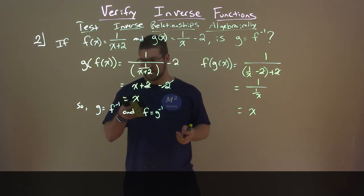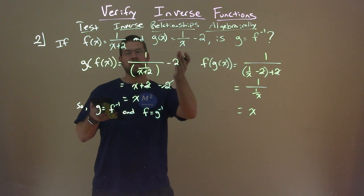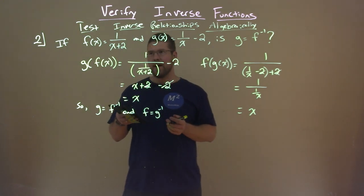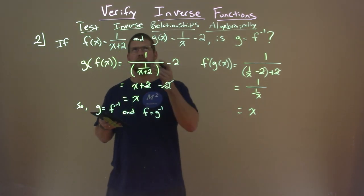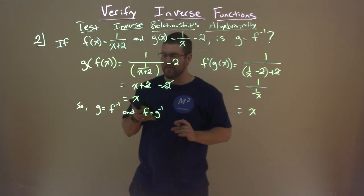Verifying that we're good, it worked out. They both equaled x, so we can say that yes, g of x is the inverse of f of x. Let me erase this and we'll get to another example.